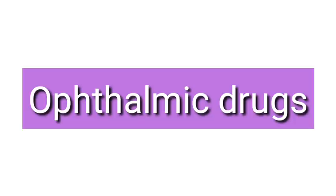Now we will move on to the ophthalmic drugs. Whenever you are asked about the ophthalmic drugs, the most common question will be about the routes of administration. Ophthalmic drugs can be used either topically in the form of drops, ointments, gels, or ocuserts. They can also be used as periocular injections — like subconjunctival injection, subtenon's injection, retrobulbar injection or peribulbar injection. They can be given intraocularly by intracameral or intravitreal route, or given systemically. These are the various routes of administration.